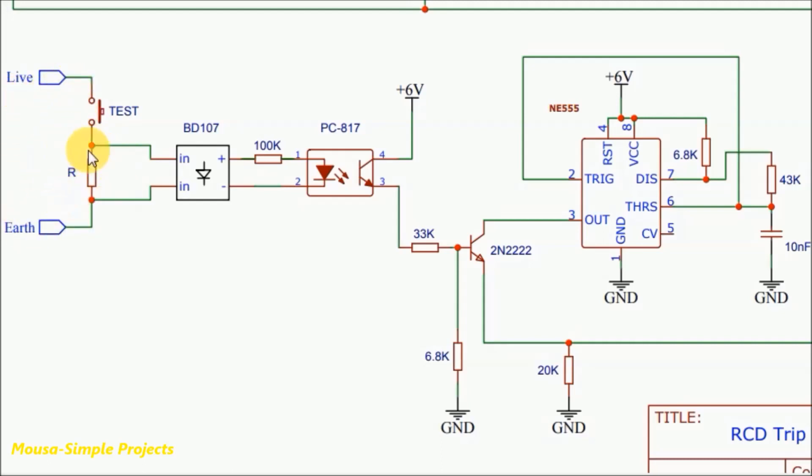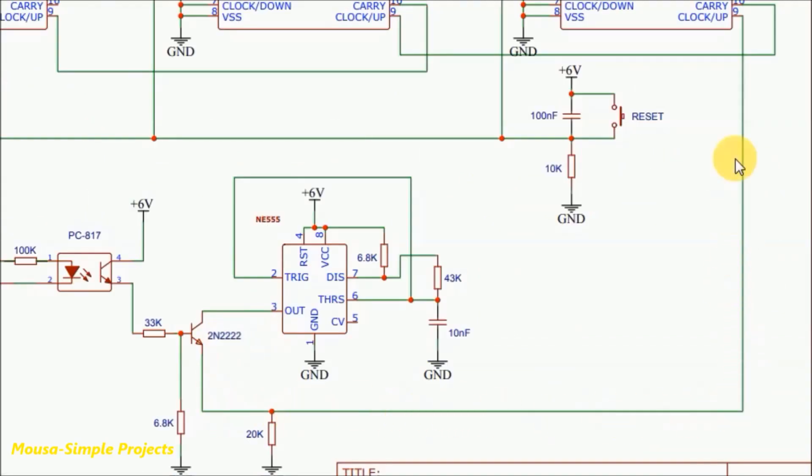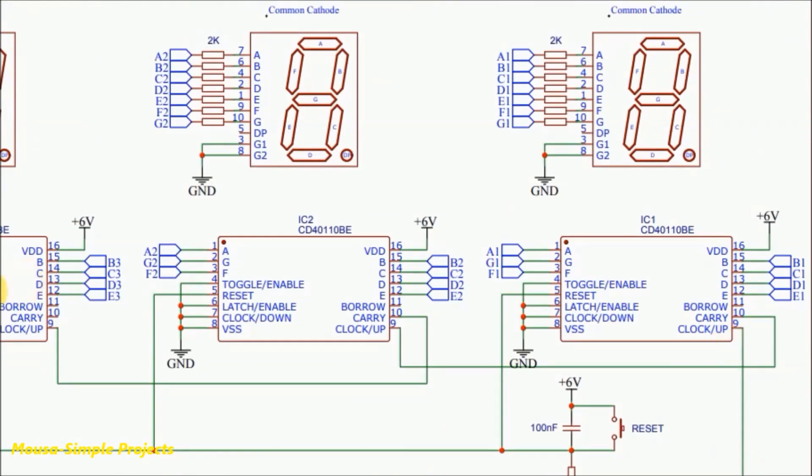So some AC voltage drops across it. This voltage runs the optocoupler and switches on the transistor. So the transistor hooks up the oscillator to the counter, and the counter starts to count the delay time in milliseconds.